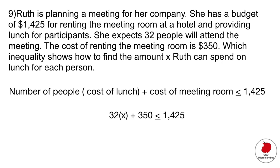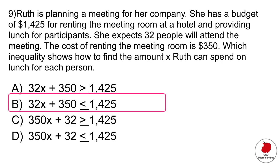It would be that: 32 people are the number of people coming. X is the cost of lunch, which we don't know. And $350 is the cost of the meeting, which is fixed. They tell us in the question. So your correct answer would be B.